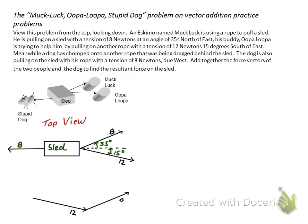There's Oopa Loopa and there's added then Muck Luck, working together there. And then there's the stupid dog working against them. And there's the resultant of all three of them together if we're going to do this by the graphic method. Of course, this entire problem set is using the component method.